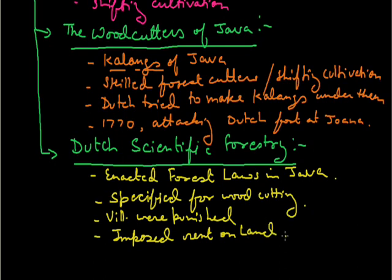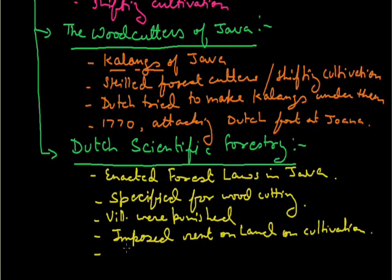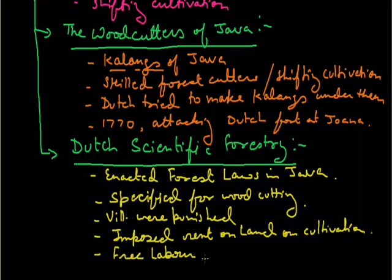The Dutch also imposed rent on cultivation and banned shifting cultivation. Those who did not follow their rules and regulations could leave the forest areas. Those who wanted to stay had to perform free labor for them, known as work without any kind of wages — this means Begar.